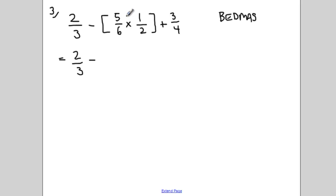And inside the brackets, I get 5 sixths times 1 half, which will become 5 over 12, plus another 3 quarters. So now my question is 2 thirds minus 5 twelfths plus 3 quarters. I look for that common denominator. And in this case, I think it's going to be 12.